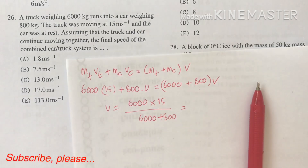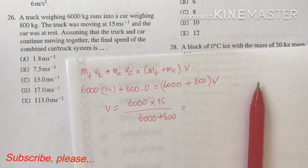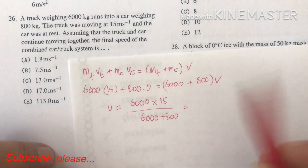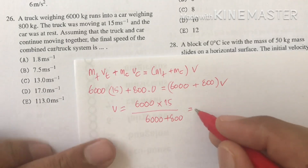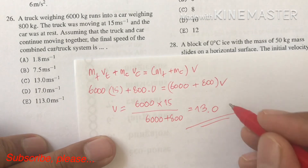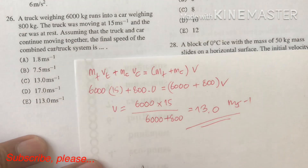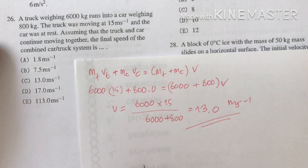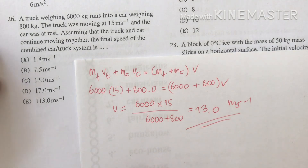Calculating: 6,000 times 15 divided by 6,800 gives approximately 13.23, so around 13.0 meters per second. The answer for number 26 is 13.0 meters per second.